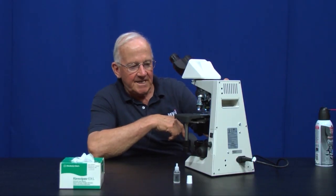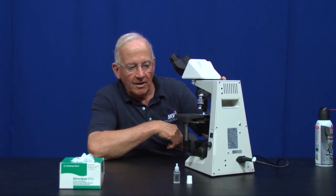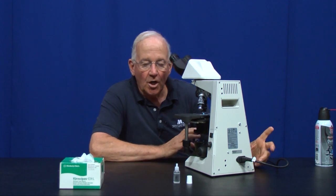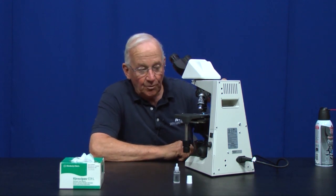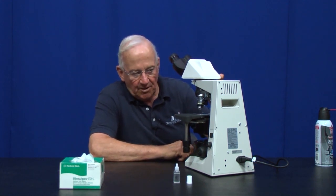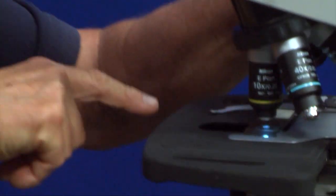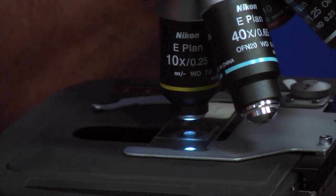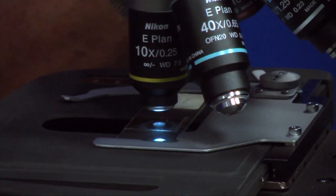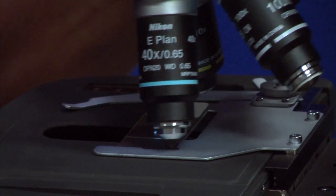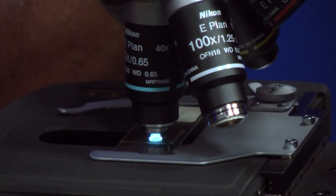None of these objectives, 4, 10, and 40, require immersion oil. Those are called dry objectives. You will notice one thing we talked about before, and that is the working distance. With the 4x, very large working distance. 10x, much shorter working distance. That's the distance between the specimen and the front lens of the objective. 40x, less than a millimeter working distance.